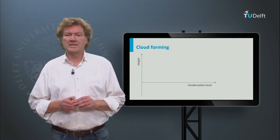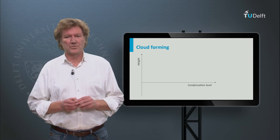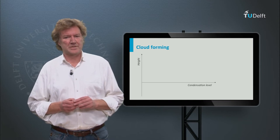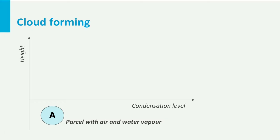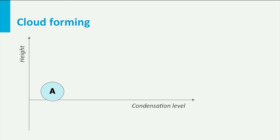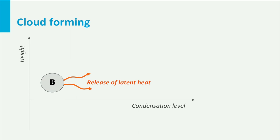We have seen that clouds form after condensation of water vapor in the atmosphere. If we take a parcel of air and water vapor and lift it upwards, it will cool down. After a while it will cross the height where the temperature is low enough for condensation to occur and liquid is formed — position B in the diagram.